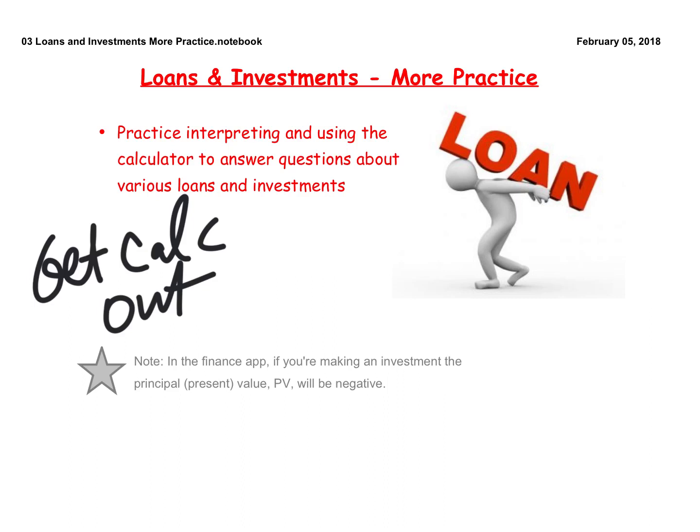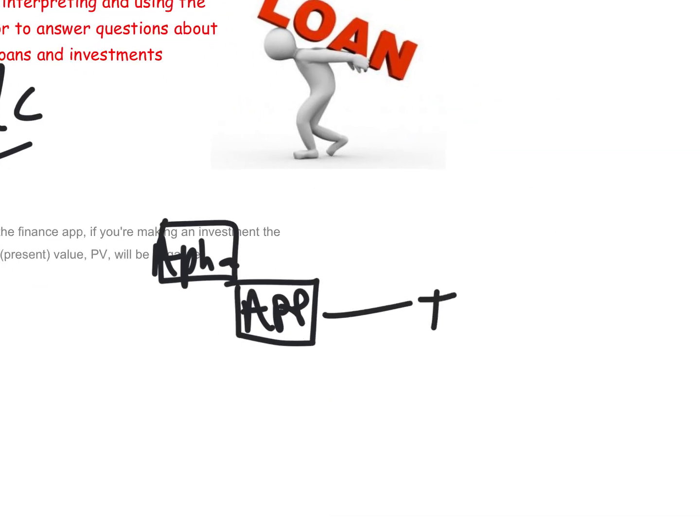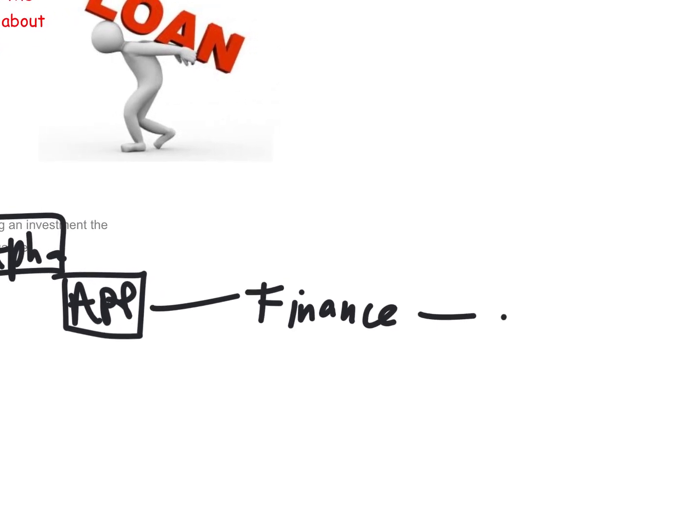So for today, we're doing this new app under the button called Apps. The Alpha key is here on the calculator, and it's kind of diagonal to that is Apps. Underneath Apps, you found the T Finance, and then underneath that, we went to the TVM Solver. That stands for time value of money.